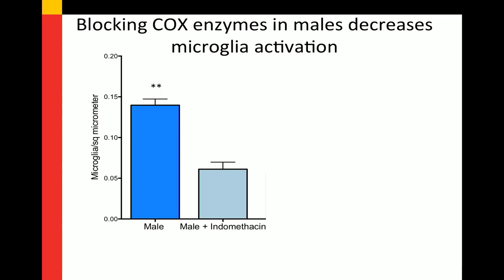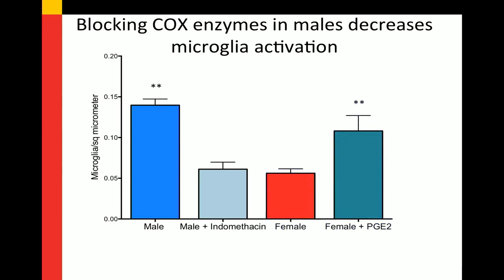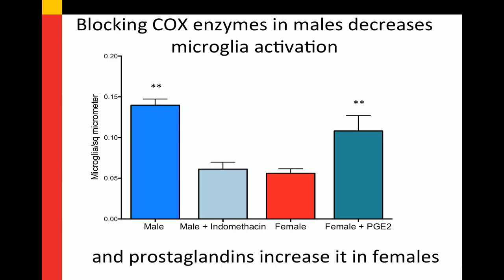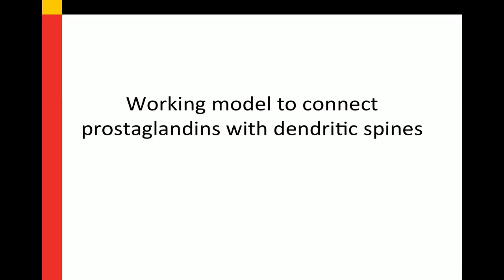How do we relate this to prostaglandins and the sex differentiation process? If we block the COX enzymes in the male, it decreases his microglia activation. If we treat the female with a single injection of PGE2, it turns on her microglia. We lit that fuse and got those microglia all worked up — it actually elevates PGE2 in the female brain. We concluded that's the process by which one single injection can carry on the whole masculinization process.